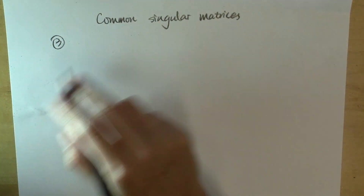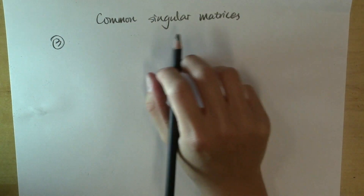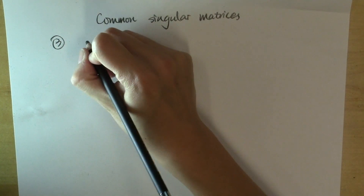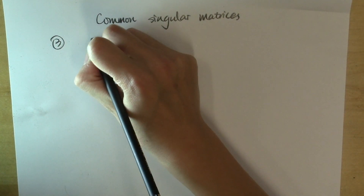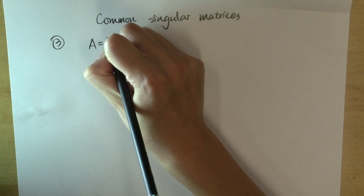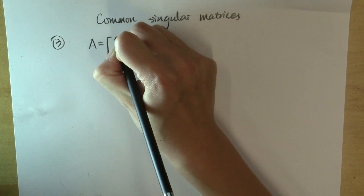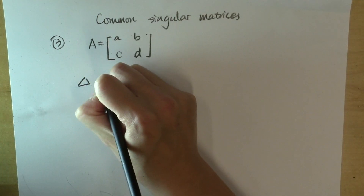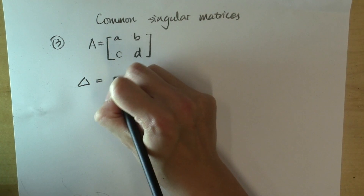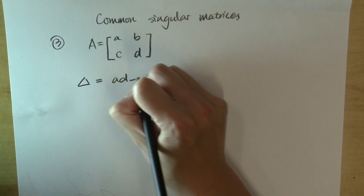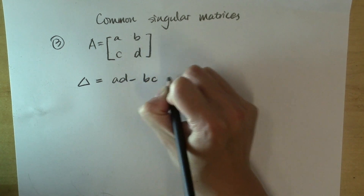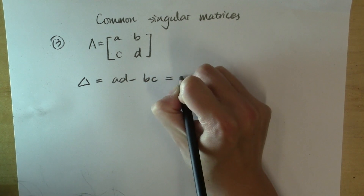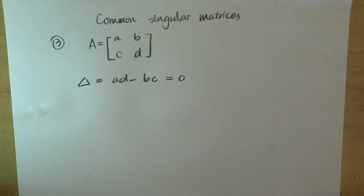Another type of commonly seen singular matrices are two-by-two matrices where delta equal to AD minus BC is equal to zero.